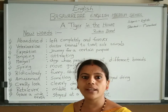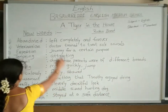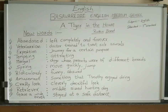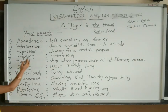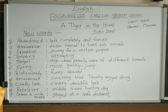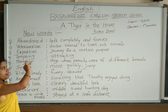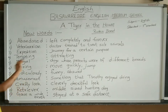Before going to the explanation of the lesson, it is better to go through the new words. Once we understand the meaning of the new words, it will definitely be very easy to understand the lesson. The first new word is 'abandoned.' Abandoned means left completely and forever. For example, if you have some bad habits like watching TV continuously, you can say: I have abandoned watching TV.